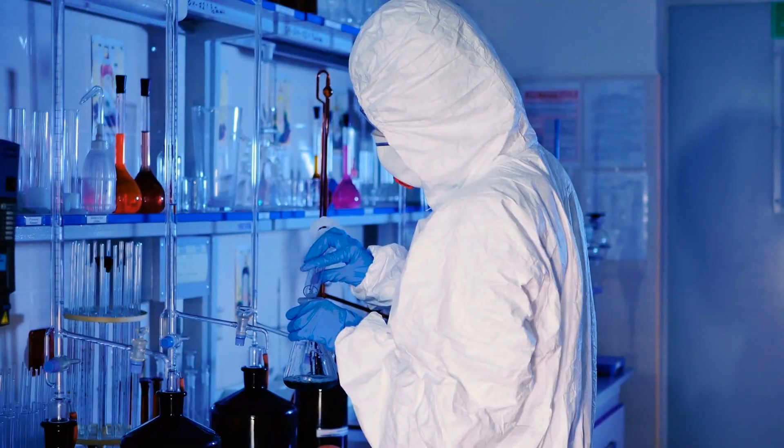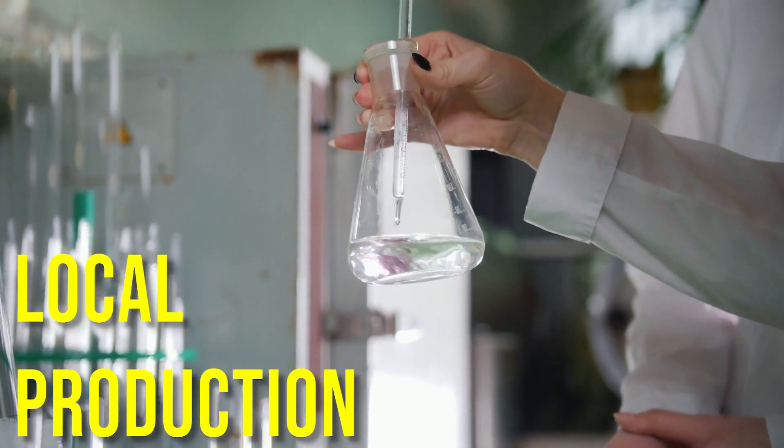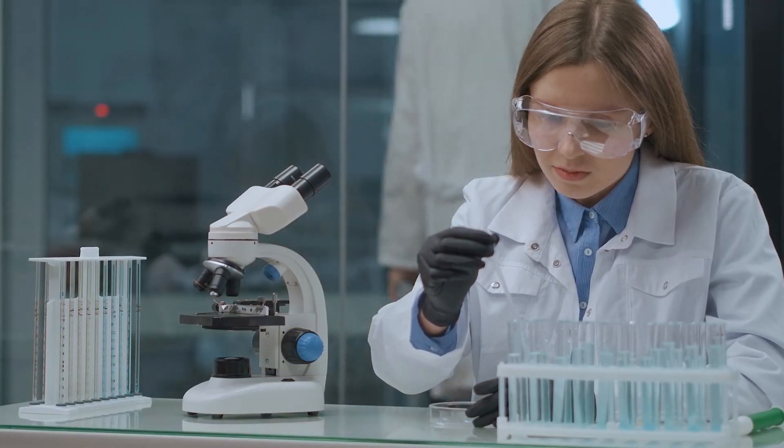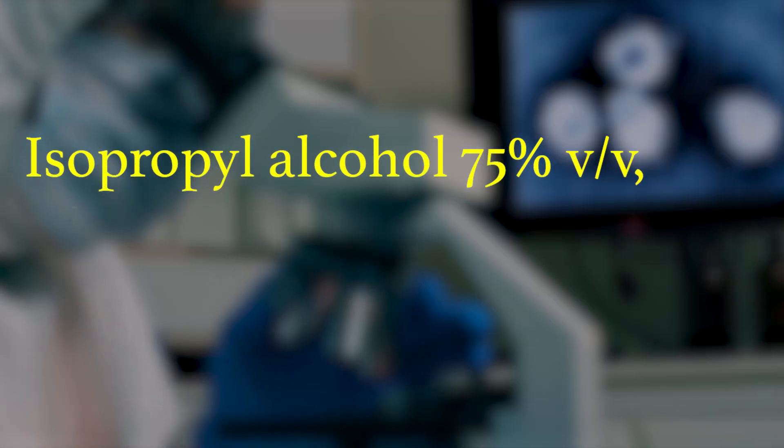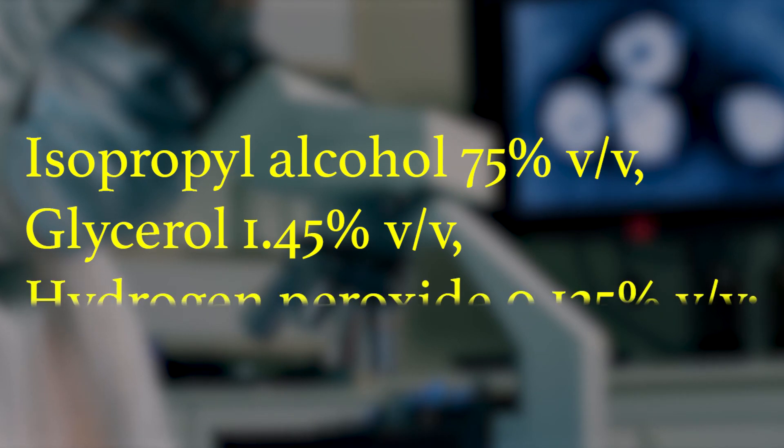WHO has recommended a formula to prepare hand sanitizer locally. WHO recommends the local production of the following formulations as an alternative when suitable commercial products are unavailable. The formulation is: isopropyl alcohol 75%, glycerol 1.45%, hydrogen peroxide 0.125%.